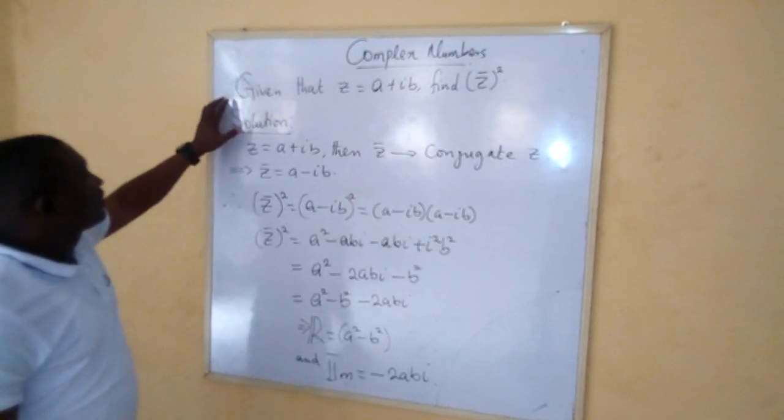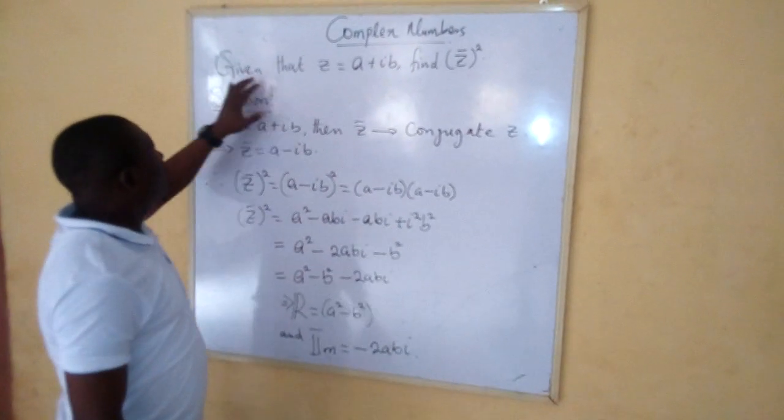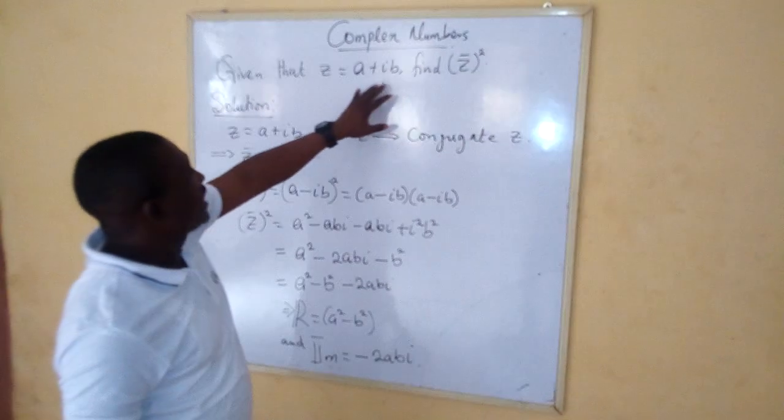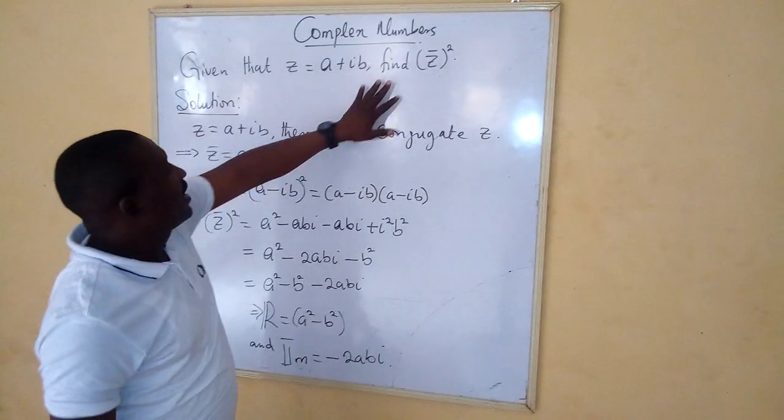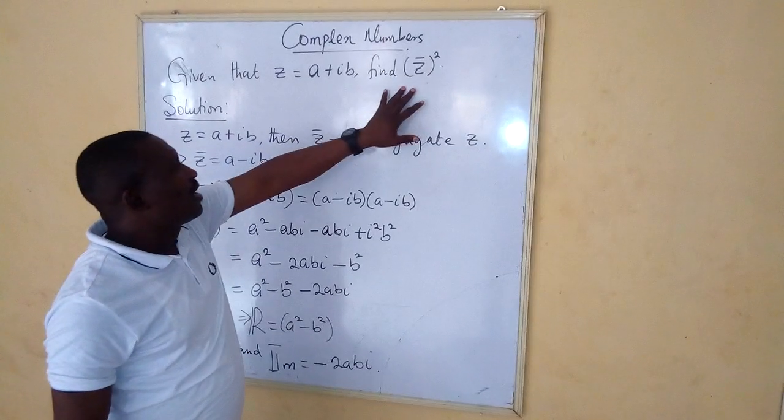The question to solve is as follows. Given that z equals a plus ib, find z-bar raised to power 2.